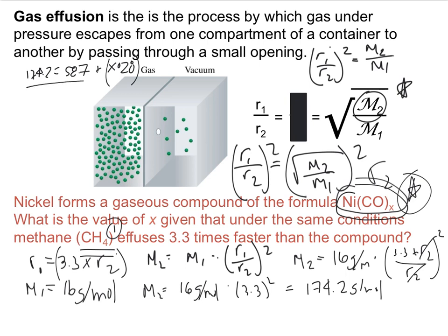If we go ahead and manipulate this and solve for x, that's going to give us 4.1, which is approximately equal to 4. So our x value is 4, and our Ni(CO) complex has this formula.